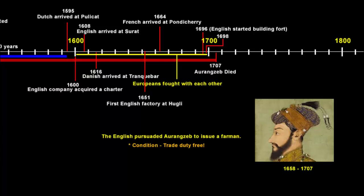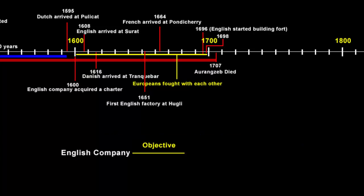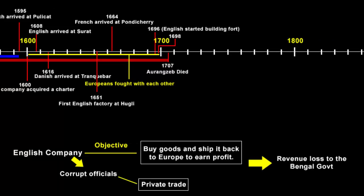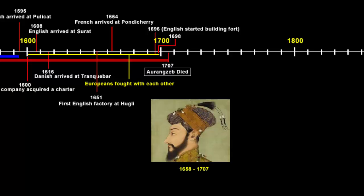The company did not care about the revenue loss. In fact, they went for more and more concessions and wanted more privileges. The company had many corrupt officials who were doing private trade. Many of these officials made millions of pounds and lived lavish lifestyles back in England by doing private trade on the side — without paying any tax. This was causing heavy loss of revenue to the Bengal government. We are now somewhere in the beginning of the 18th century, around 1700. And then, in 1707, the Mughal emperor Aurangzeb died.